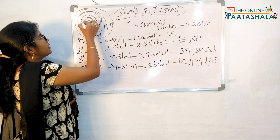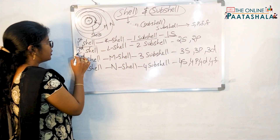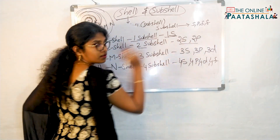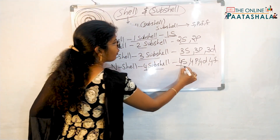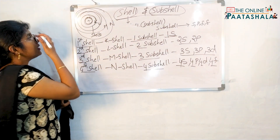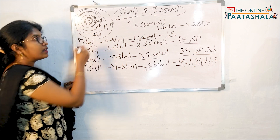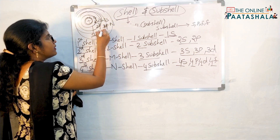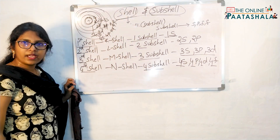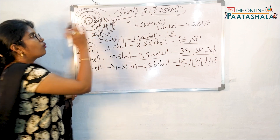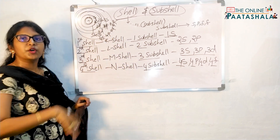Is it easy? Just remember: first shell — one subshell, that is 1S. Second shell — two subshells, 2S and 2P. Third shell — three subshells, 3S, 3P, and 3D. Fourth shell — four subshells, 4S, 4P, 4D, and 4F. That means in the first shell, 1S will be present; in the second shell, 2S and 2P; in the third shell, 3S, 3P, and 3D; and in the fourth shell, 4S, 4P, 4D, and 4F. This is a brief explanation of what is a shell, what is a subshell, and what subshells are present in each shell.